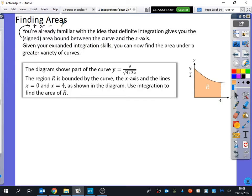It says given your expanded integration skills, you can now find the area under a greater variety of curves. There's nothing new in terms of the math stuff that we've got here, apart from we're now just going to be applying all the integration skills that we've got. The diagram shows part of the curve y equals 9 over the square root of 4 plus 3x. The region R is bounded by the curve, the x-axis, and the lines x equals 0 and x equals 4. Use integration to find the area of R.